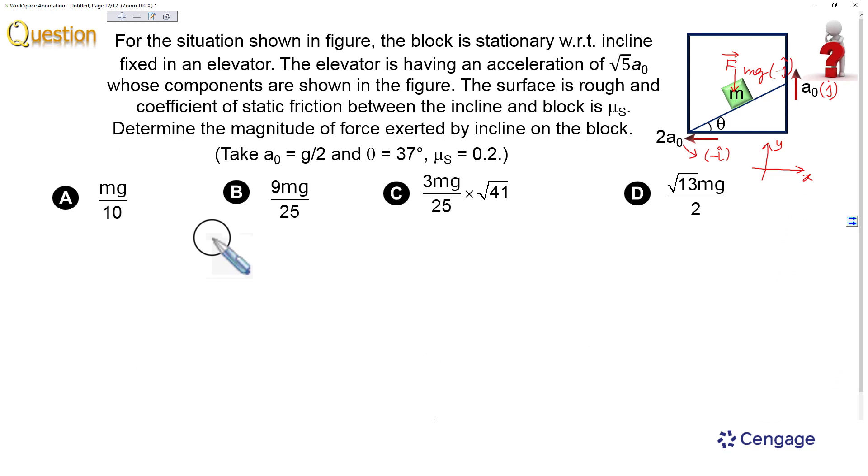Now, the forces acting on the block are contact force F vector and weight. Here we can write the equation of motion for the block. The equation of motion should be F vector + mg(-j) equals m times acceleration, which is m(-2a₀i + a₀j).